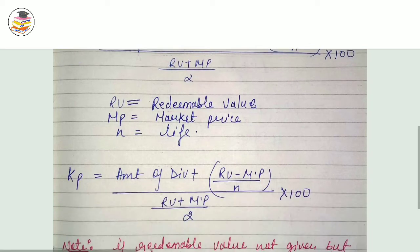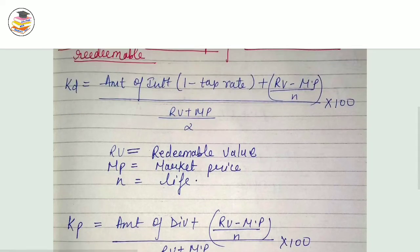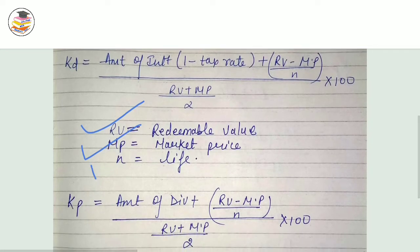whole upon RV plus MP divided by 2, into 100. This is the formula. Here, RV means redeemable value, MP means market price, and N means life.